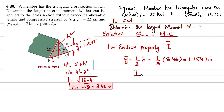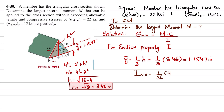Now we find I about the neutral axis for this triangular cross section. The formula is I = (1/36) × base × height³ = (1/36) × 4 × (3.46)³. This gives I about the neutral axis equal to 4.6188 in⁴.